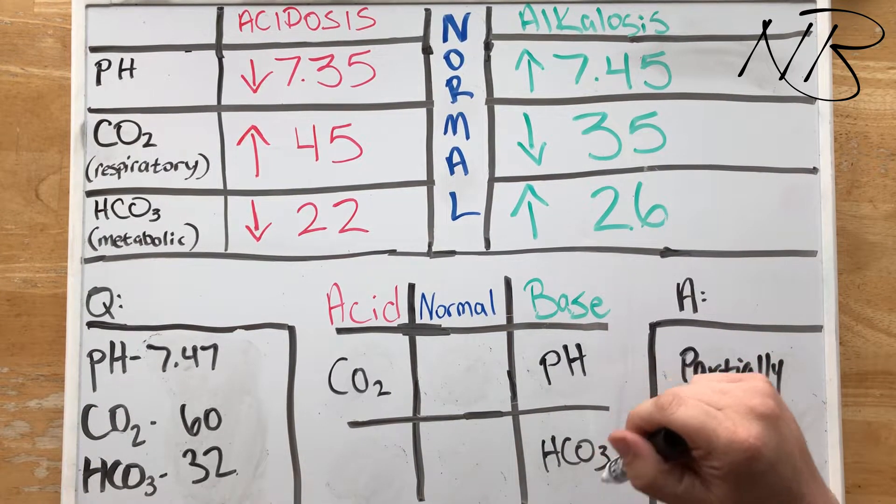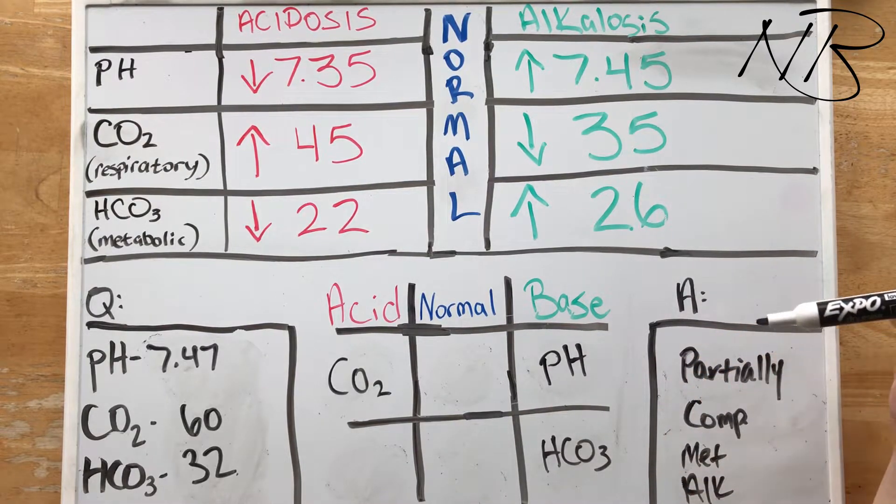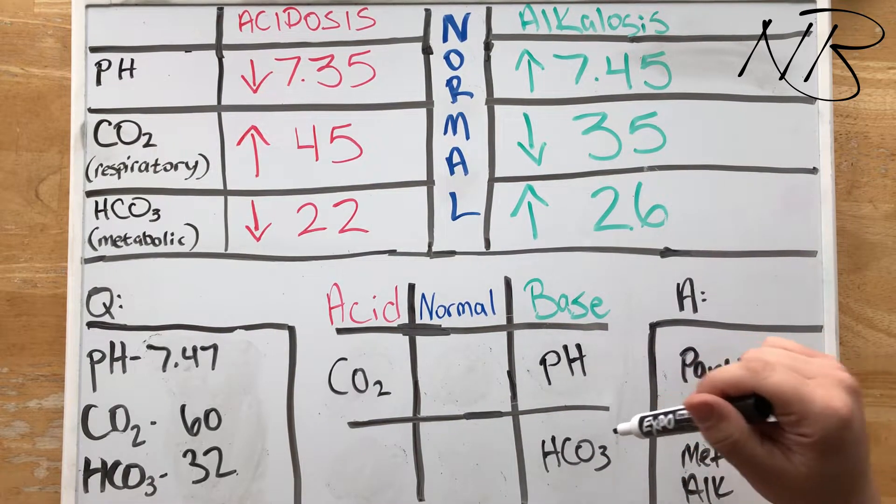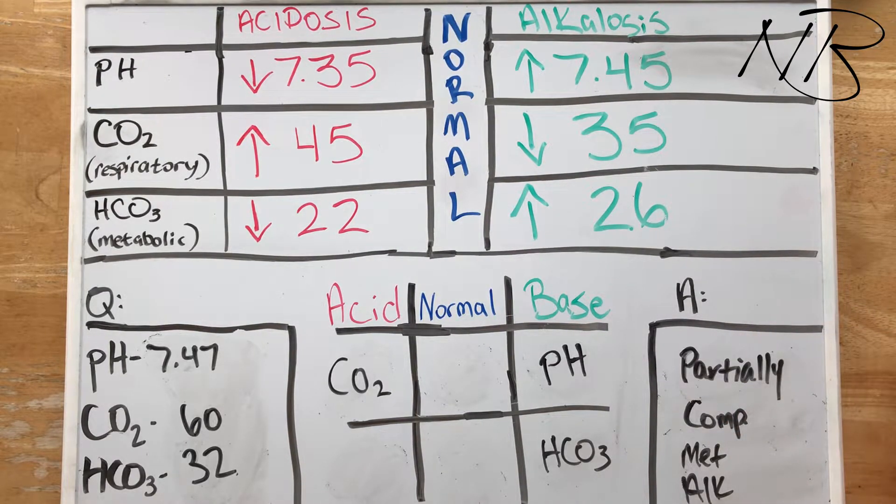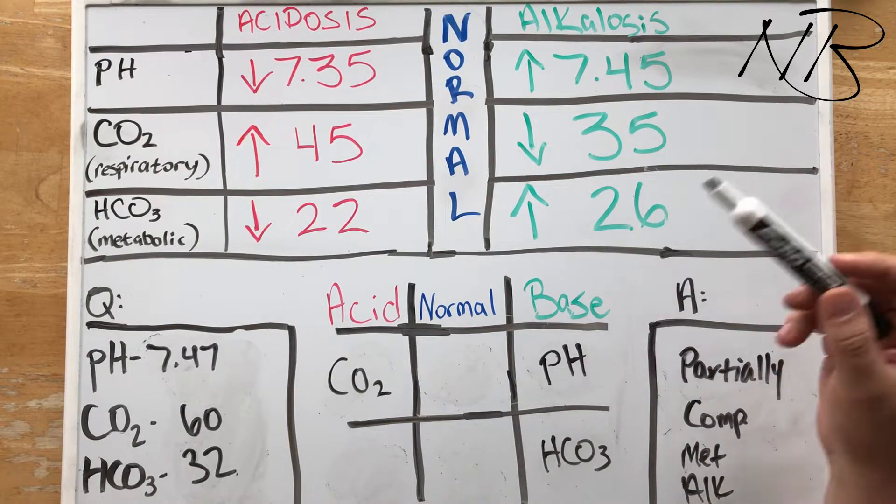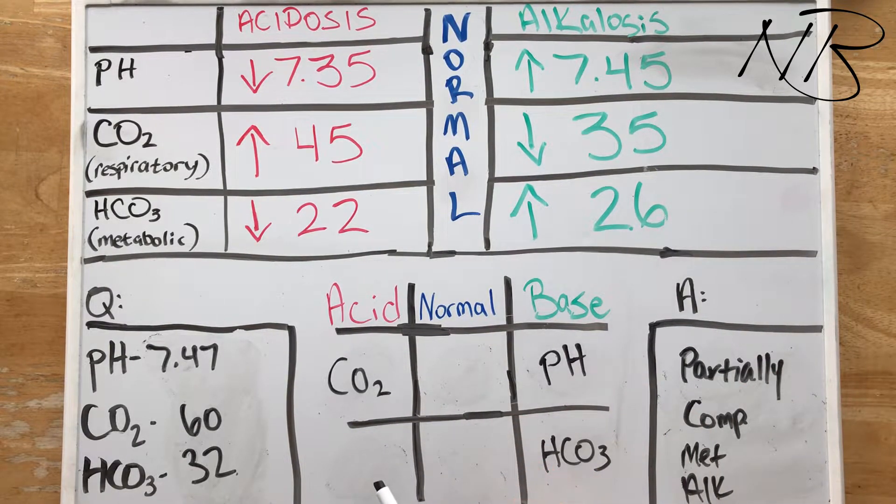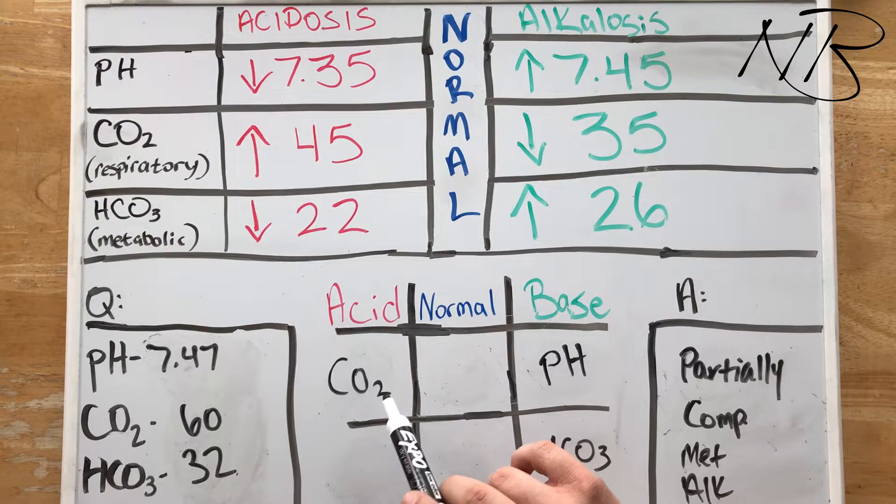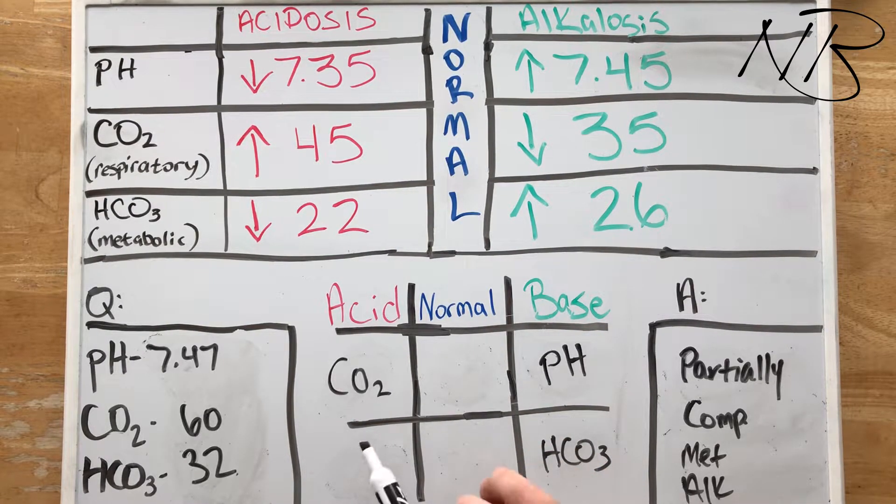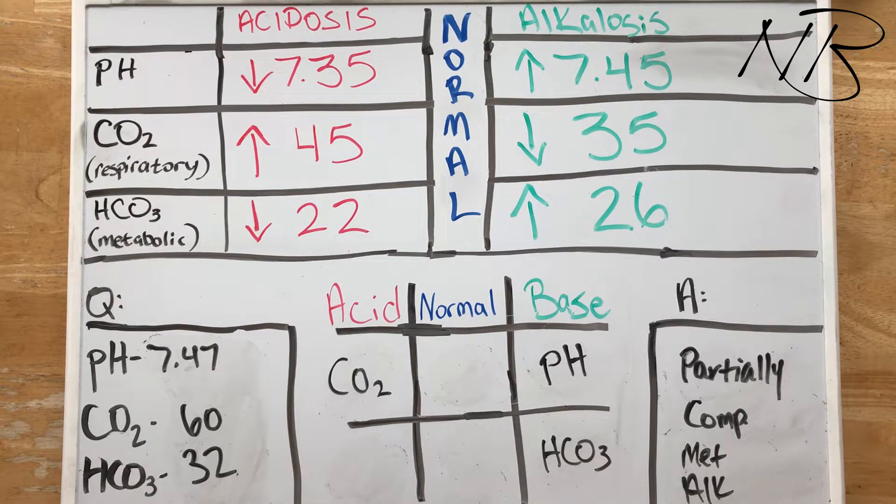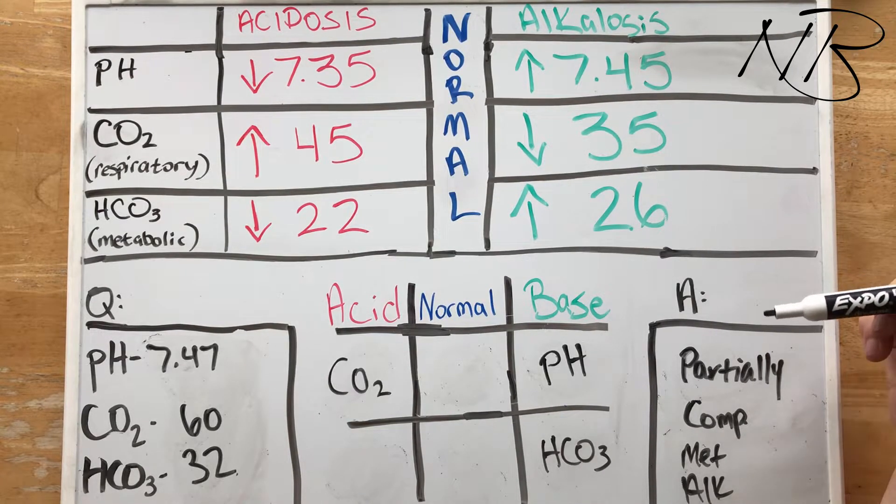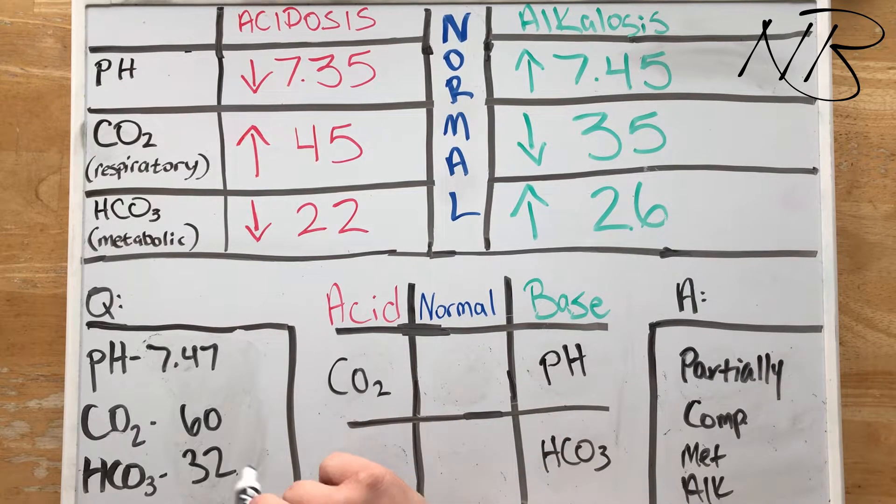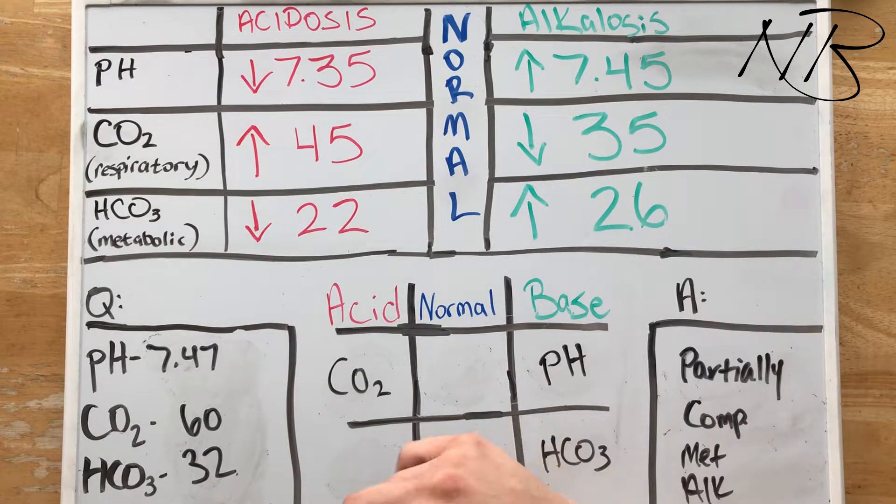So we have an issue, a dysfunction in our renal system causing us to be in a state of metabolic alkalosis. And so our body just naturally tries to compensate for that by altering our CO2 levels. In this case, by trying to retain and hold on to CO2. Therefore, we have a higher than normal CO2 level. So it's an important concept to think about when you're talking about compensatory mechanisms and homeostatic compensation.